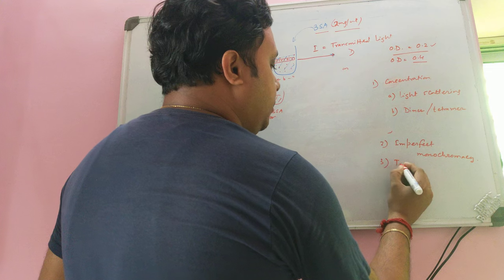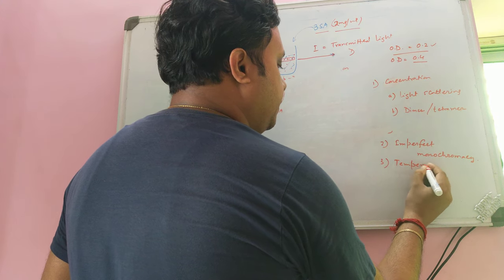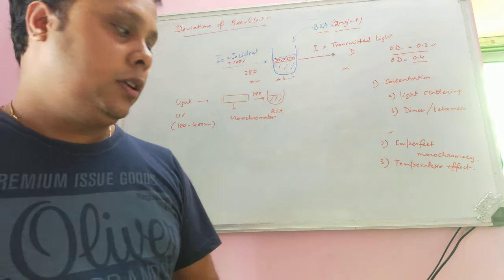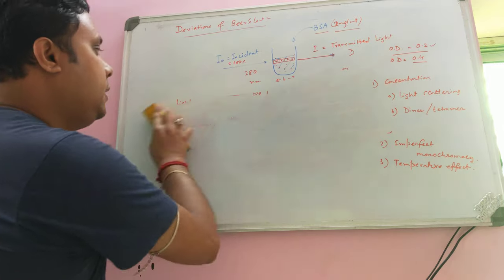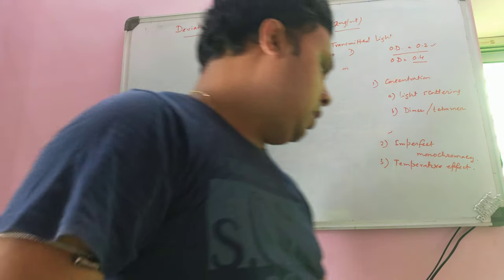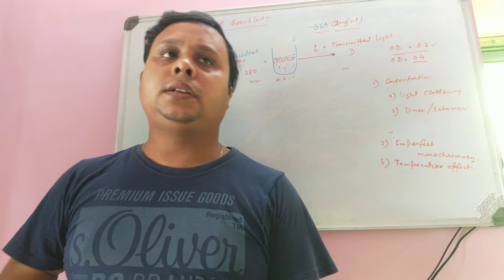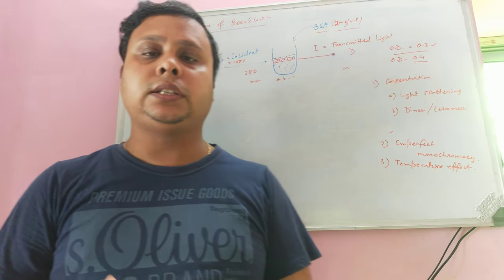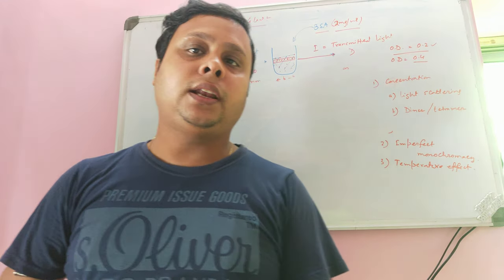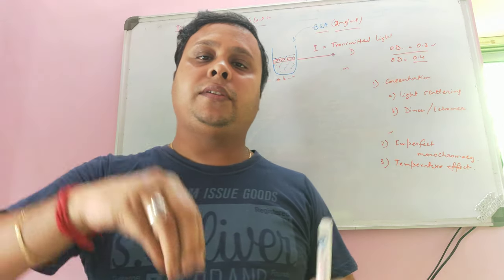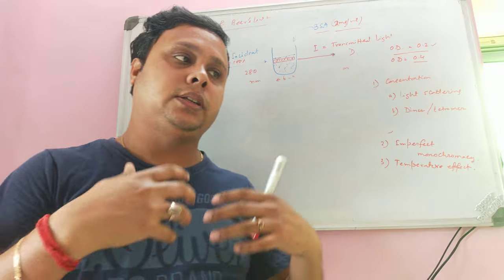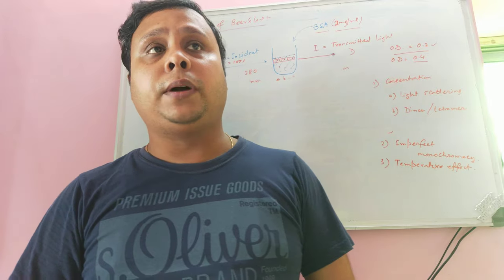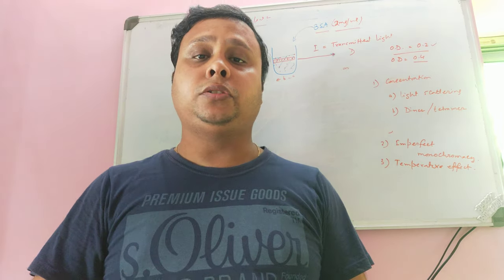The third deviation is the temperature effect. For many experimental procedures, heating is required for color development. For example, if you estimate DNA concentration by the DPA (diphenylamine) method, after adding diphenylamine you need to heat the sample to develop the color. The same is true for RNA measurement by the Orcinol method — after adding Orcinol reagent, you need to heat the sample.